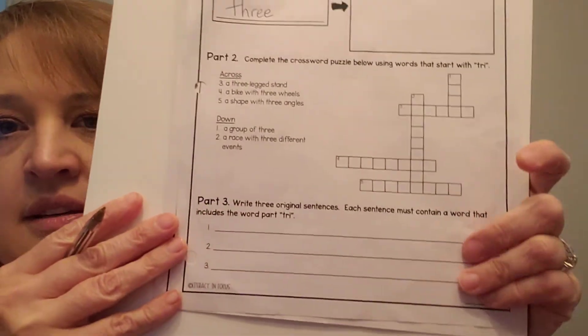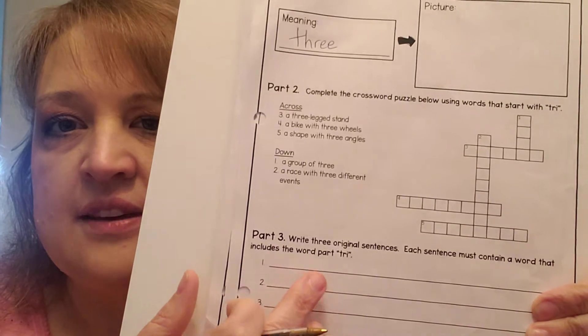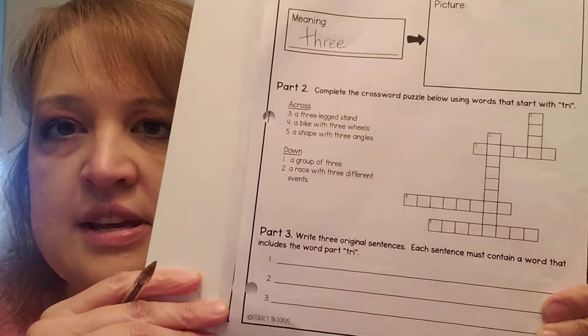All right, open up to the very last page. And under the meaning, go ahead and put what? Three. And draw yourself a picture for three. And we're gonna now do a crossword puzzle. The crossword puzzle answers are gonna give us the words that we're gonna use down here.